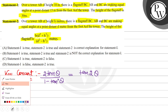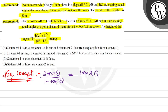What is the question here? Over a tower AB of height 10 meters — so this is a tower with foot A and top B, height 10 meters. And here is a flagstaff BC above the tower.